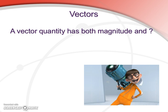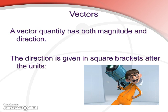So a quick question: a vector quantity has both magnitude and what? Well, the answer is it has a direction. So it is some value applied through a direction. The convention for this is pretty simple — we give a magnitude with units, and then in square brackets we talk about the direction that it's applied.